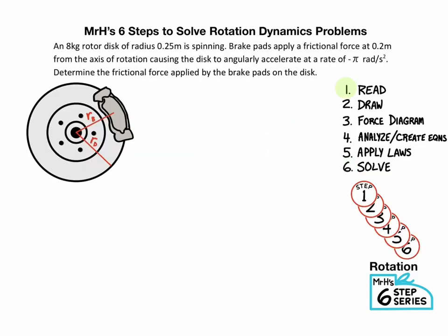Alright, let's take a look at another example. An 8 kilogram rotor disc of radius .25 meters is spinning. The brake pads apply a frictional force of .2 meters from the axis of rotation, causing an angular acceleration of negative π radians per second squared. Determine the frictional force applied by the brake pads. So step one is to understand the question. They're asking for a frictional force, so we write F equals question mark.